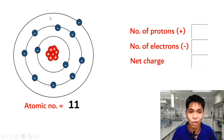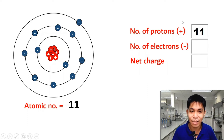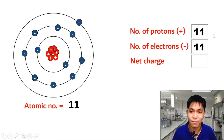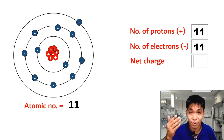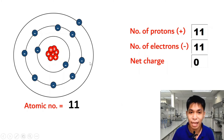Consider an atom with an atomic number of 11, meaning the number of protons equals 11. If this atom is neutral, it also has 11 electrons. The number of protons (positive) is 11, the number of electrons (negative) is 11, so the net charge is zero. This atom has only one valence electron, so to become stable it would need to find seven more electrons — which is a lot.